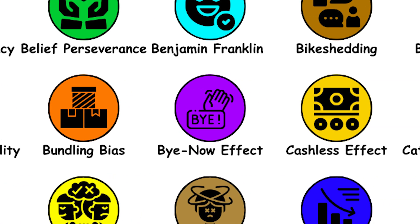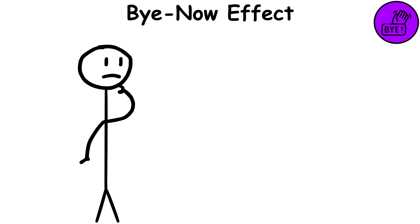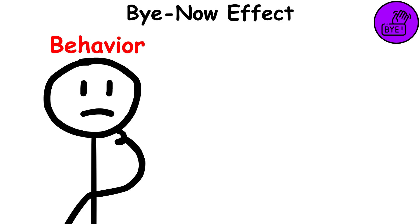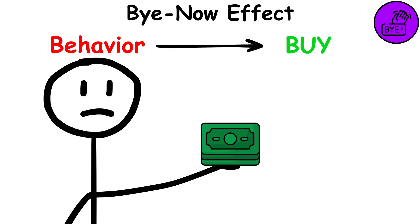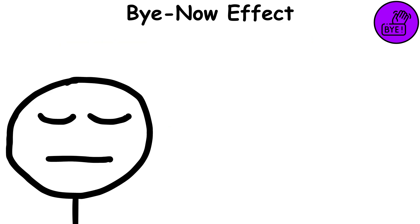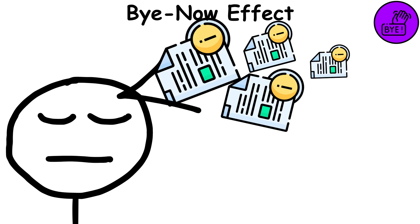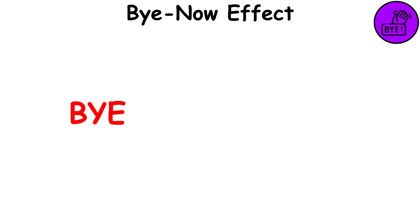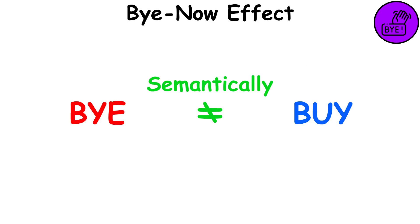Buy now effect. This describes our tendency to think of the word 'buy' when we read the phonetically similar word 'by.' As a result, our behavior is primed by the associations of 'buy,' and this can cause us to spend more. When we process vast amounts of information, it is easy for our brain to mix up different links and associations. Even though 'by' is not semantically related to 'buy,' they are phonetically identical.